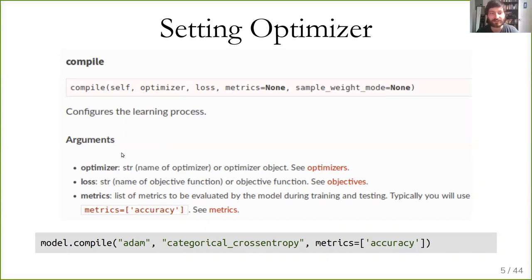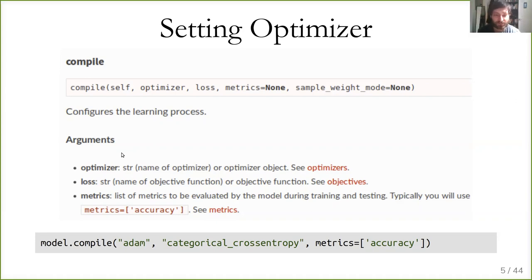Before you can start learning the model, you finalize it with the compile method, where you set the optimizer and the loss, and potentially which metrics you want to log during learning. Here I'm using the Adam optimizer — there are many optimizers in Keras, and Adam is a pretty good default choice, but you should check the documentation. For classification with a softmax output, you need to use categorical cross-entropy. For metrics, I'm monitoring accuracy to measure generalization performance.